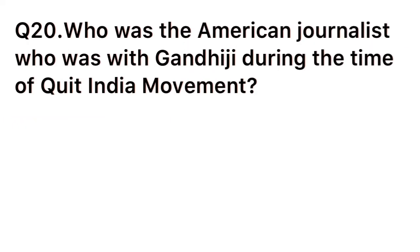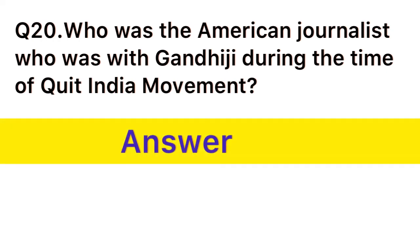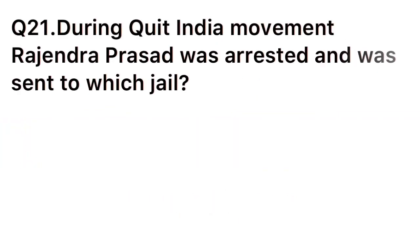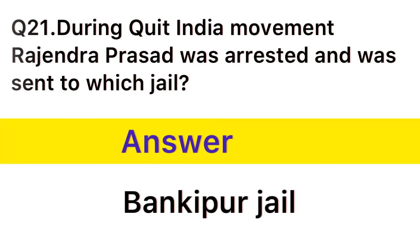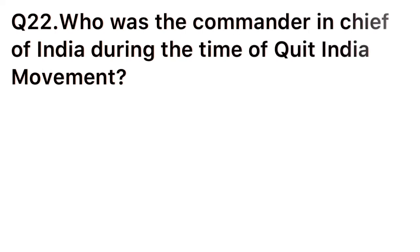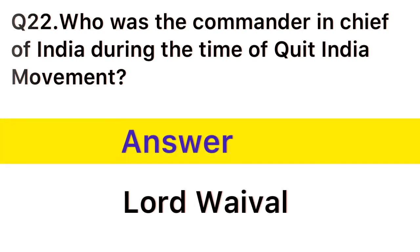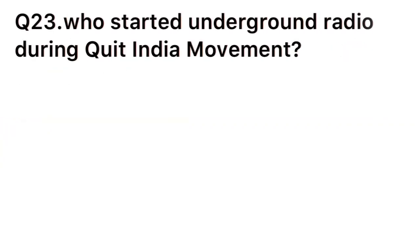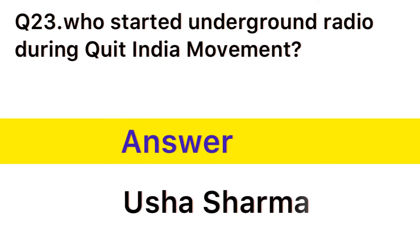Question number 20: Who was the American journalist who was with Gandhiji during the time of Quit India Movement? Answer: Louis Fischer. Question number 21: During Quit India Movement, Rajendra Prasad was arrested and was sent to which jail? Answer: Bankipur Jail. Question number 22: Who was the Commander-in-Chief of India during the time of Quit India Movement? Answer: Lord Wavell. Question number 23: Who started underground radio during Quit India Movement? Answer: Usha Mehta.